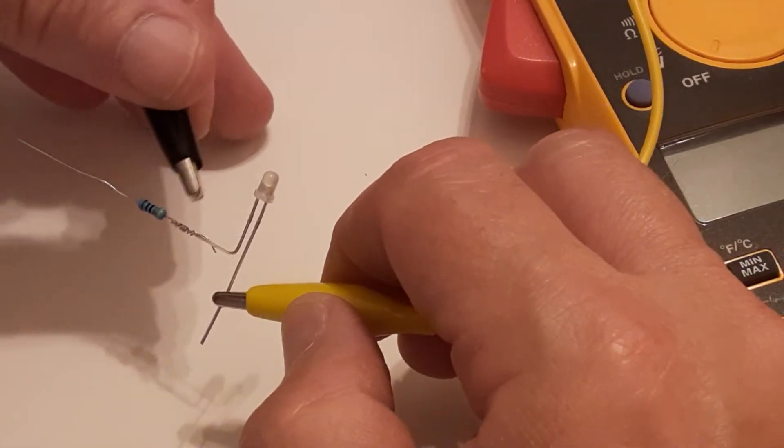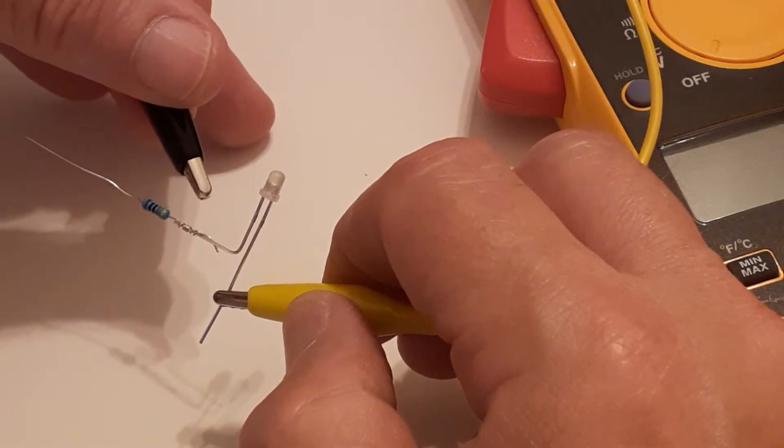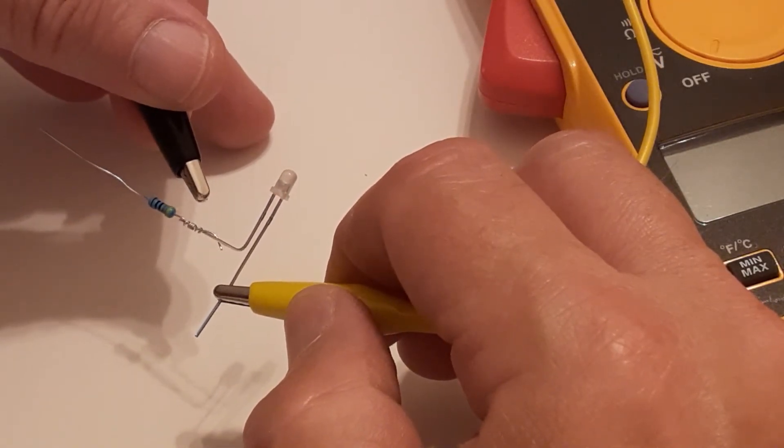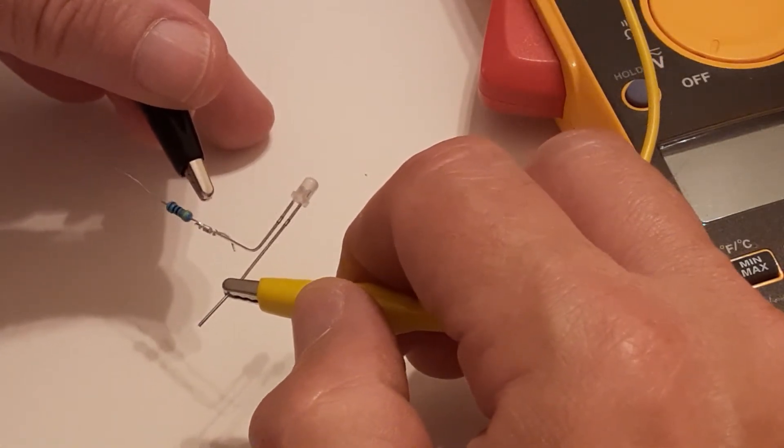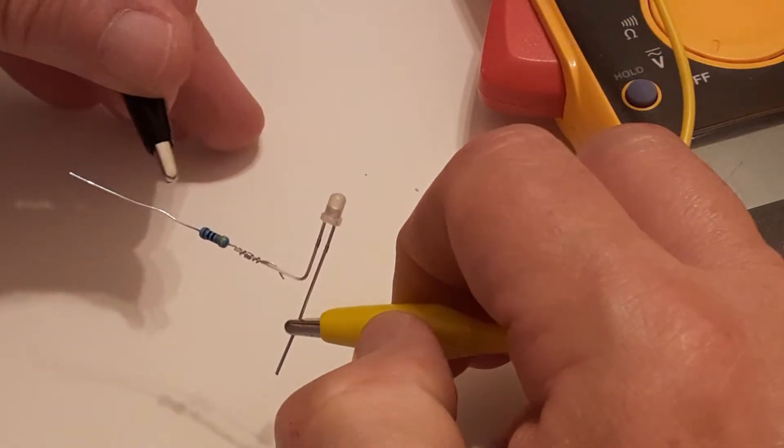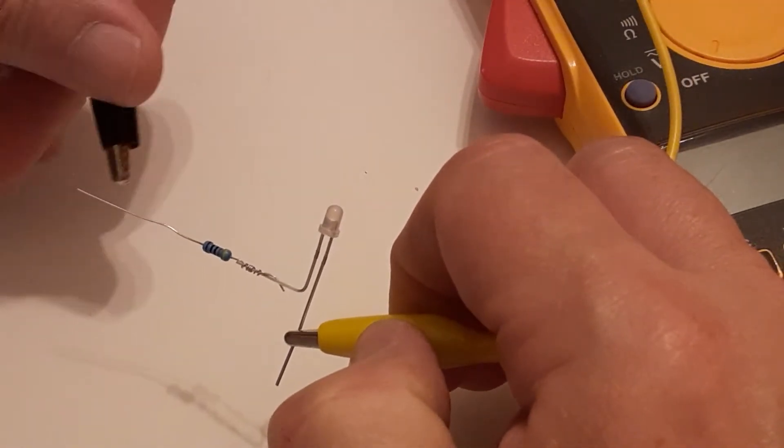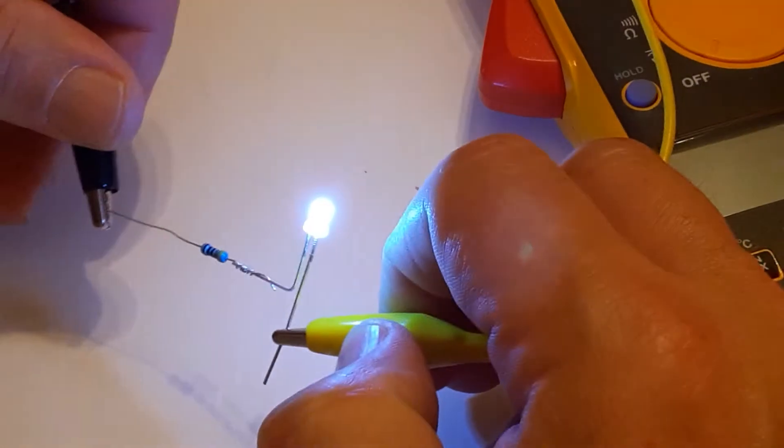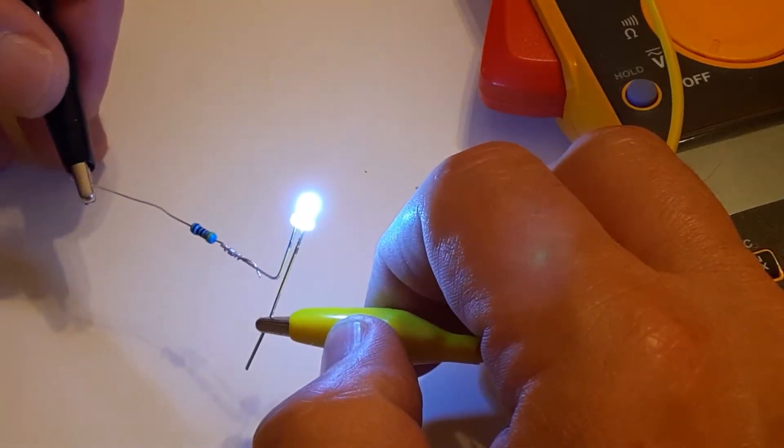So what the resistor does is it limits the amount of current through the LED. If I plug this straight onto the LED, it's going to get real bright, real hot. I don't think I really want to do that. So this limits the current to a safe amount so that I don't burn out the light.